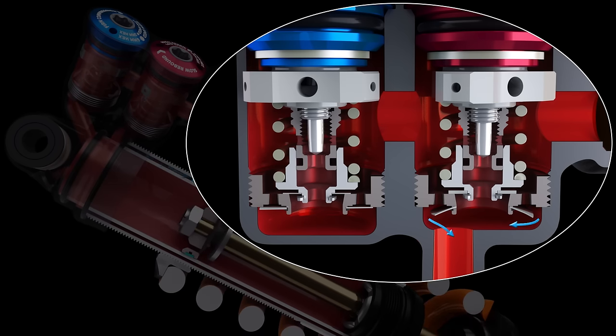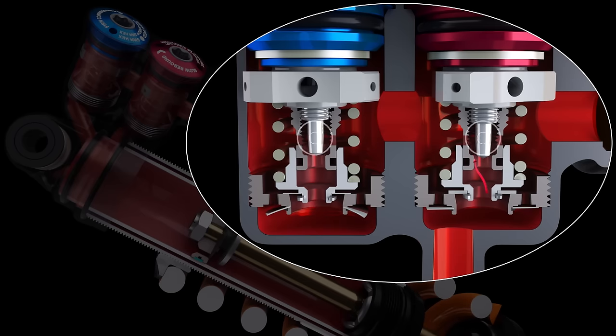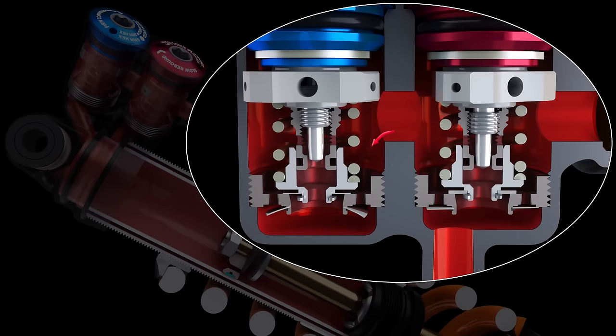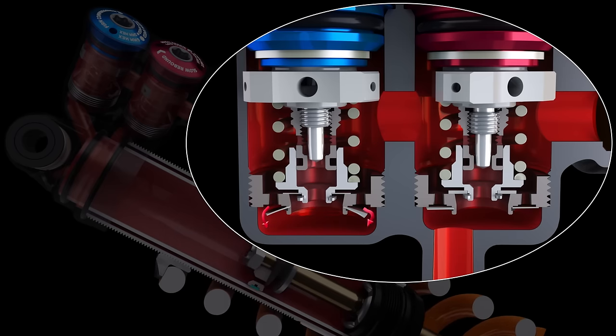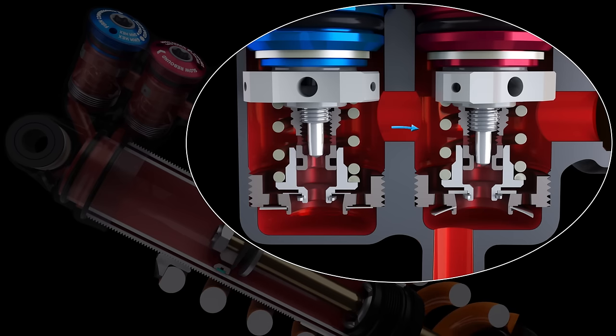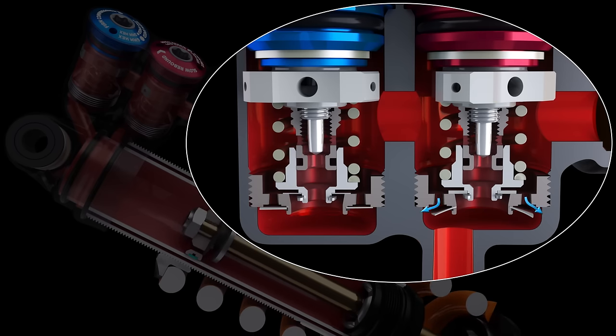Low-speed compression and rebound damping are controlled by metered ports. A clockwise adjustment of either 3 mm hex head adjuster restricts the port to firm or slow low-speed damping, while a counter-clockwise adjustment opens the port for quicker damping.